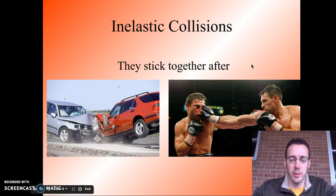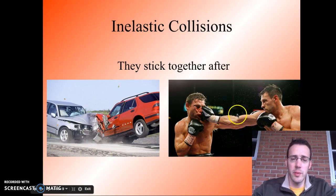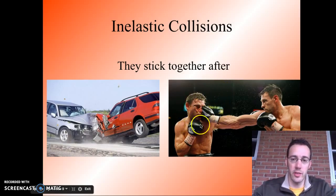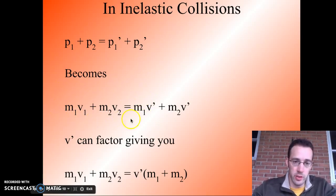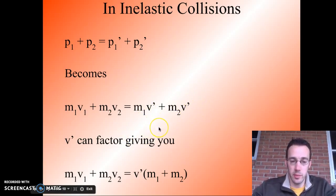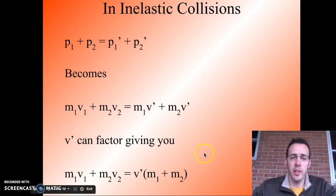In an inelastic collision, objects stick together after they hit — like car crashes. We still use conservation of momentum, and start with the same equation. But since the velocities after the collision are the same (they stuck together), we don't have two different post-collision velocities. We factor that out, so the equation becomes: m1v1 plus m2v2 equals (m1 plus m2) times V prime. We can then solve for V prime by dividing both sides by the combined masses. This simplification is very common in inelastic collision problems.